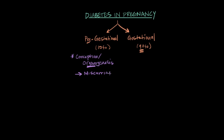Those high levels of glucose during that really pivotal time can lead to a miscarriage or significant anomalies within the fetus. However, with gestational diabetes, the problem with glucose control develops during the pregnancy — usually not until the second trimester — so after the point of conception and organogenesis. This means miscarriage and fetal anomalies don't tend to be a problem with gestational diabetes.